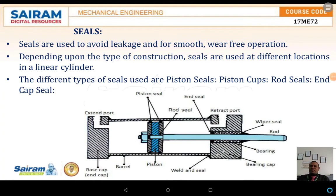Welcome back for the discussions on the seal. Seals are used to avoid leakages — that is the first and foremost application. The second one is for smooth and wear-free operation. Especially in the case of pneumatic systems, the seal and sealant materials play a major role. Depending upon the type of construction, seals are placed at different locations, especially in the case of linear cylinders or linear actuators.